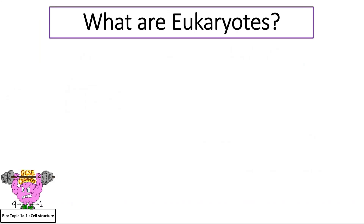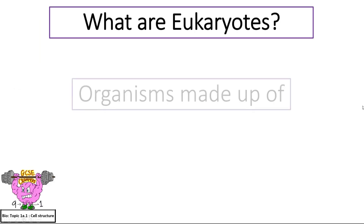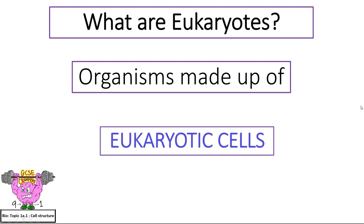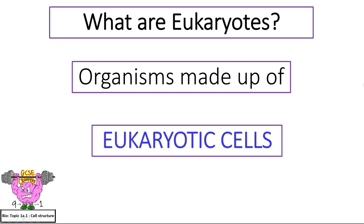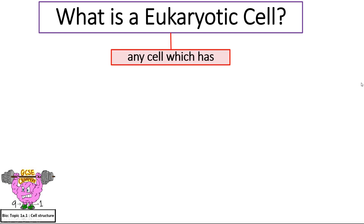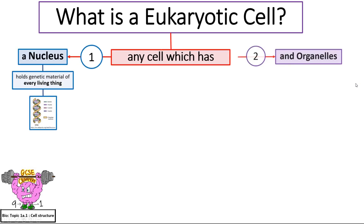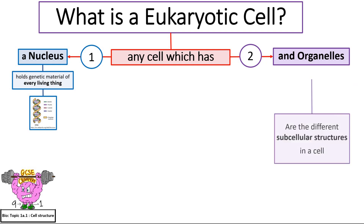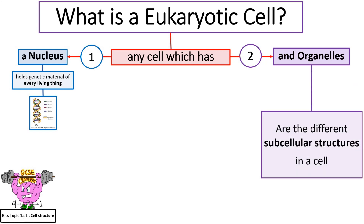What are eukaryotes? Eukaryotes are organisms made up of eukaryotic cells. What is a eukaryotic cell? It's any cell which has a nucleus and organelles. And what are organelles? Organelles are the different subcellular structures in a cell.